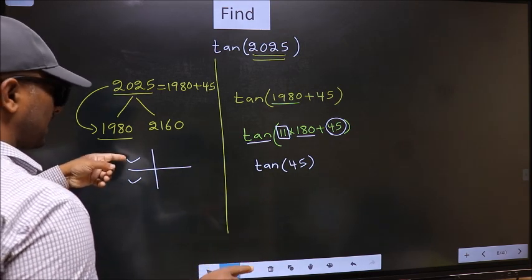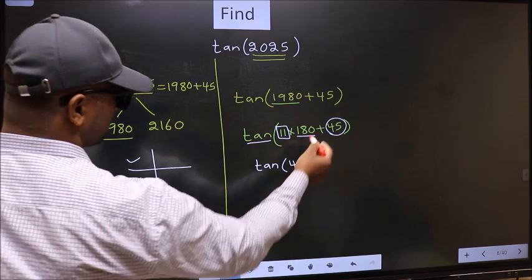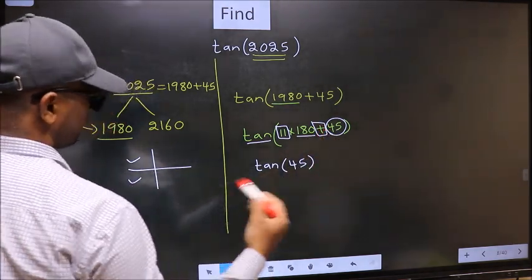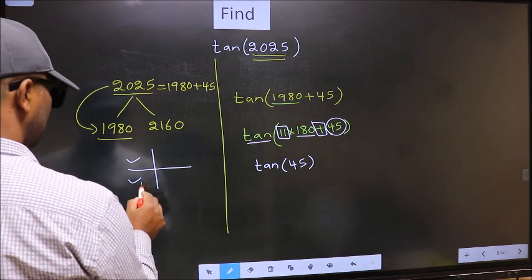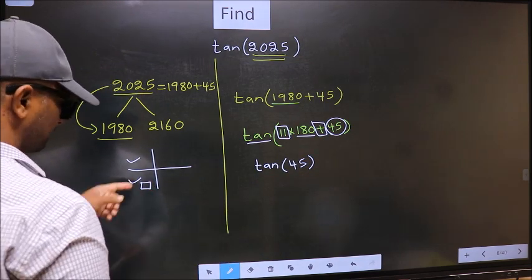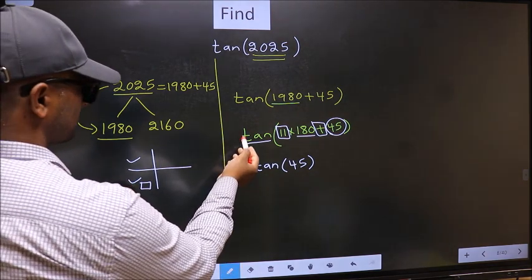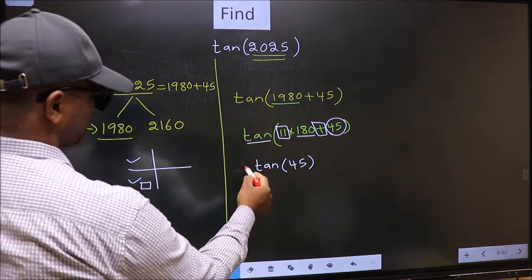So now to select the quadrant, we should look at this symbol. Here we have plus. That means the angle lies in the third quadrant. And in the third quadrant, tan is positive. So we should put plus.